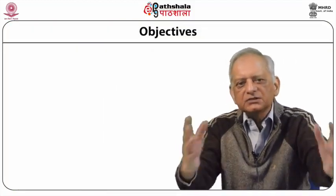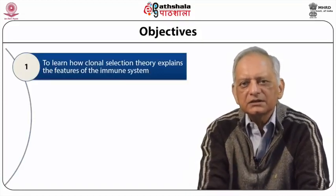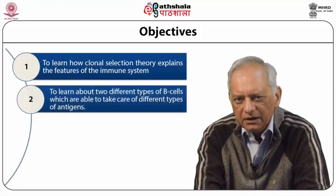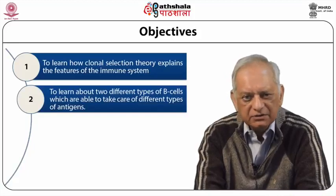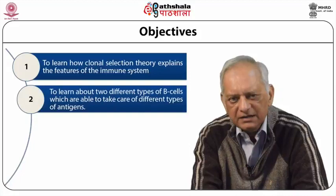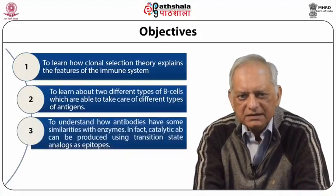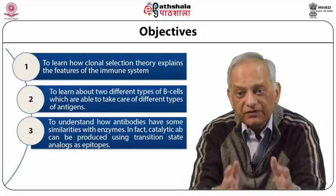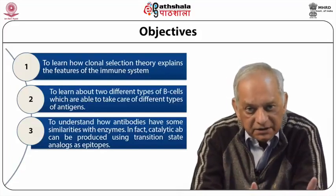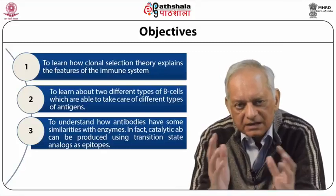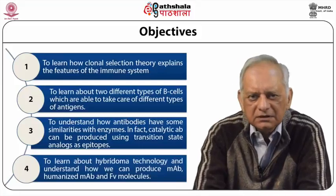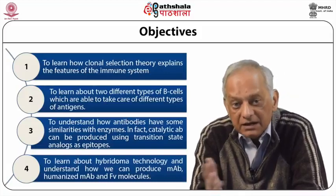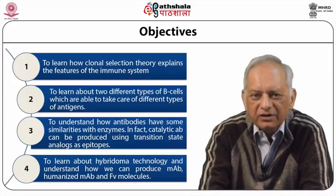The objectives of this module are to learn about how clonal selection theory explains the features of the immune system, to learn about two different types of B cells which are able to take care of different types of antigens, and to understand how antibodies have some similarities with enzymes. In fact, catalytic antibodies can be produced using transition state analogues as epitopes. We will also learn about hybridoma technology and understand how we can produce monoclonal antibodies, humanized monoclonal antibodies, and FV molecules.